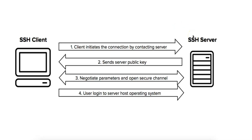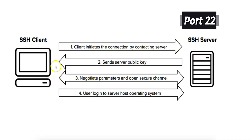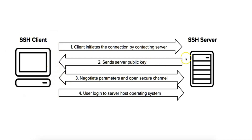The server runs an SSH daemon that listens for connection requests on a specific port, which defaults to port 22. The client runs an SSH client to initiate the connection using the server's IP address and the SSH protocol.